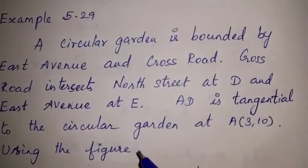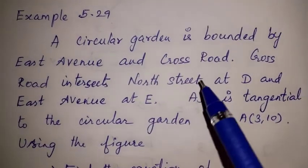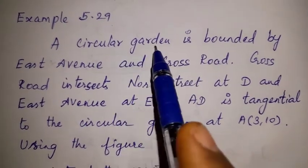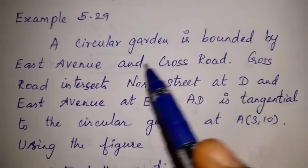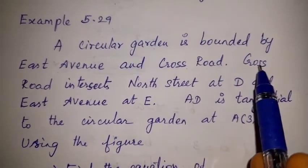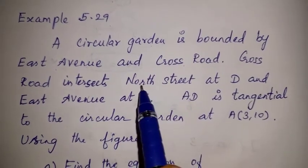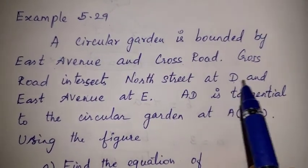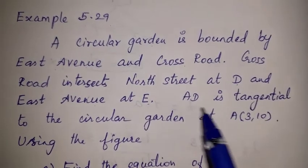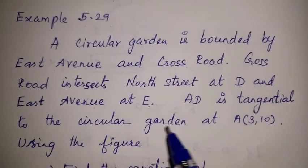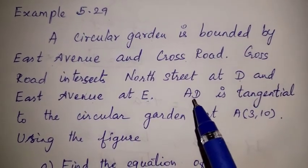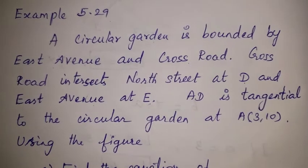Let me explain the figure. The figure involves three paths. The circular garden is a circle. East Avenue and Cross Road are roads. Cross Road intersects North Street at D and East Avenue at E. Point A is tangential to the circular garden, meaning AD is a tangent to the circle.